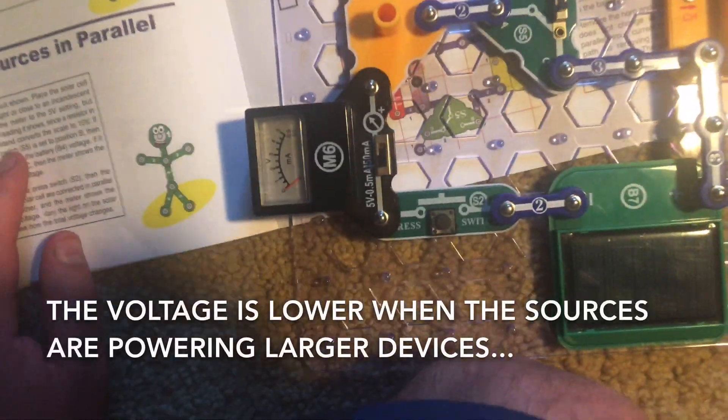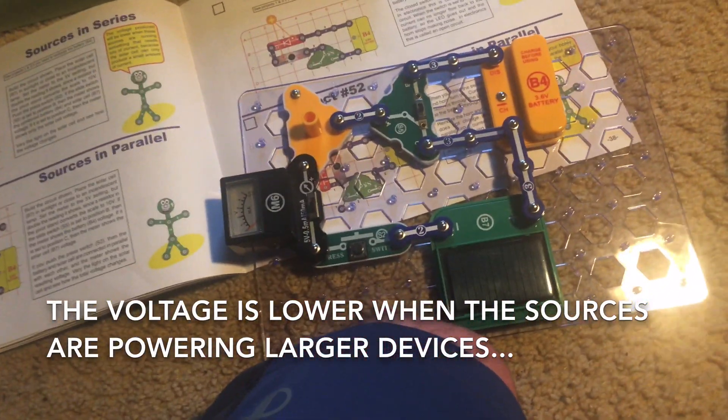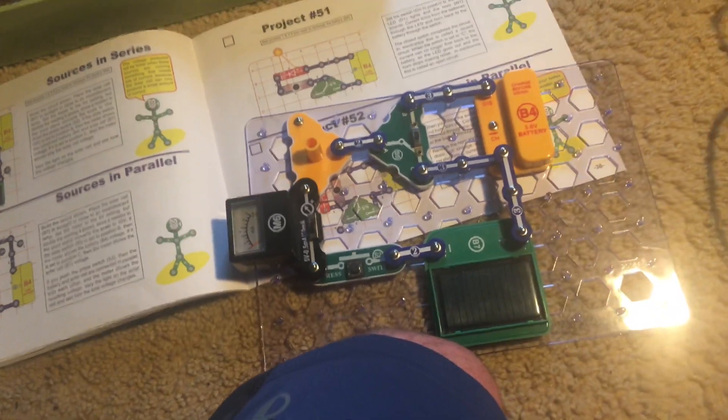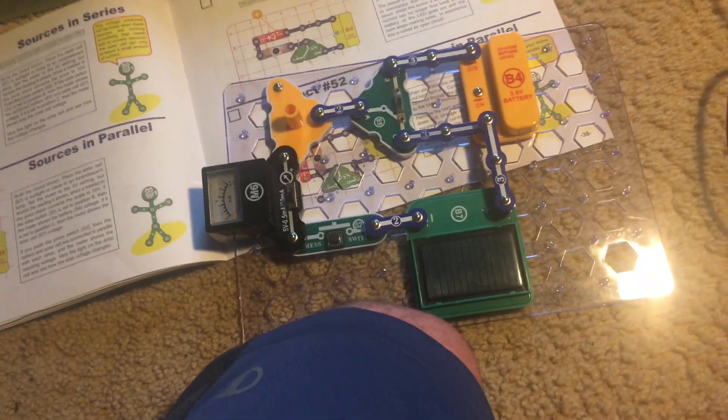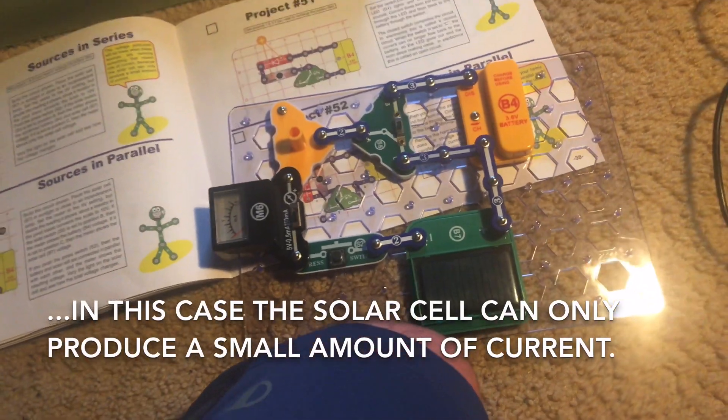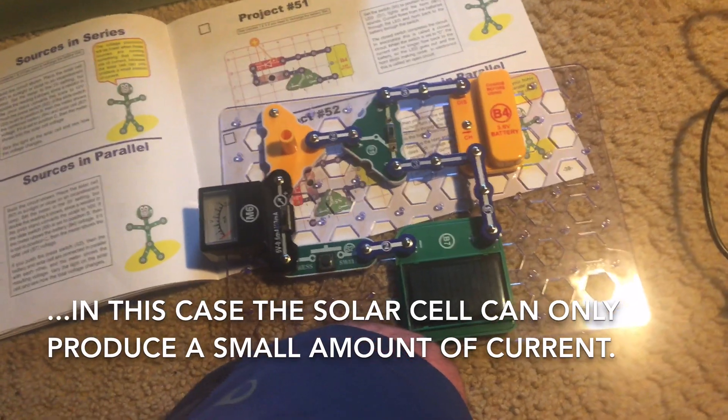Voltage produced will be lower when these sources run larger devices or pieces of equipment because the solar cell, in this case, can only produce a small amount of current.